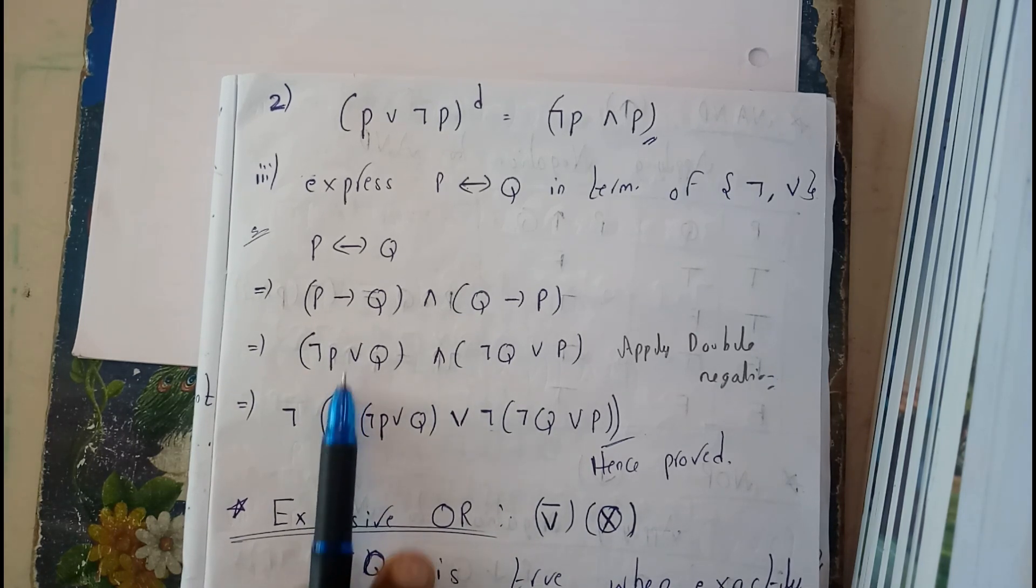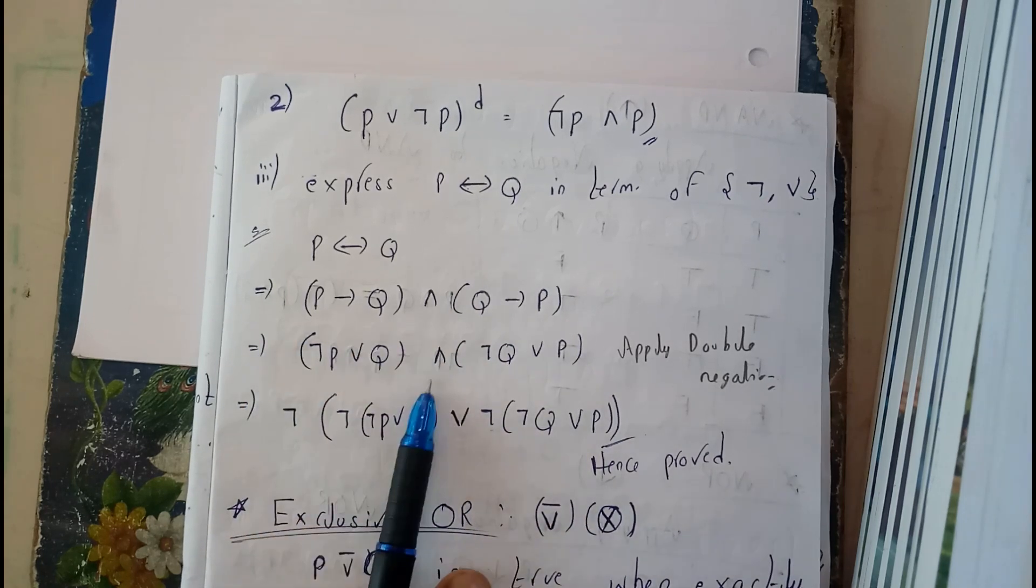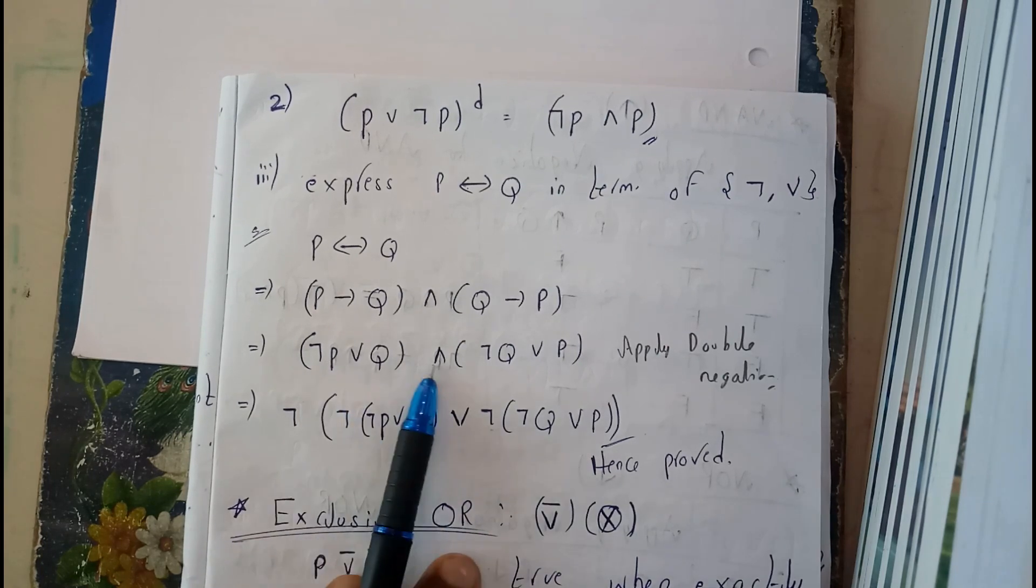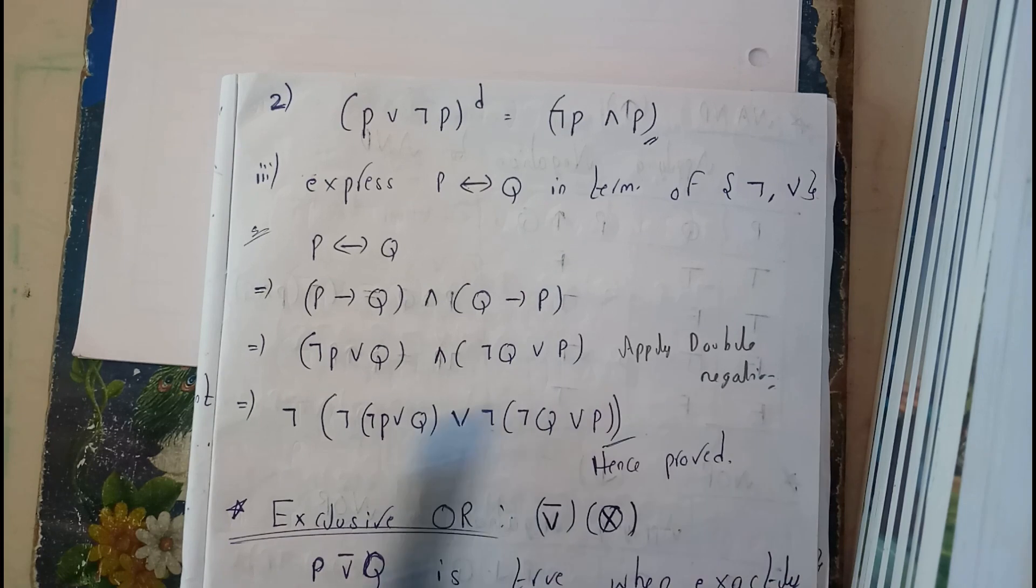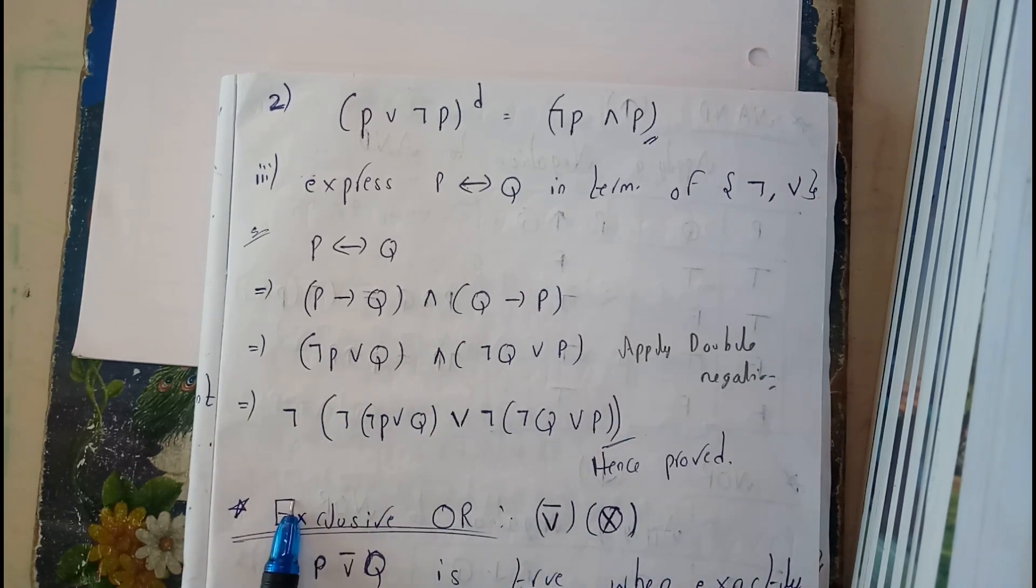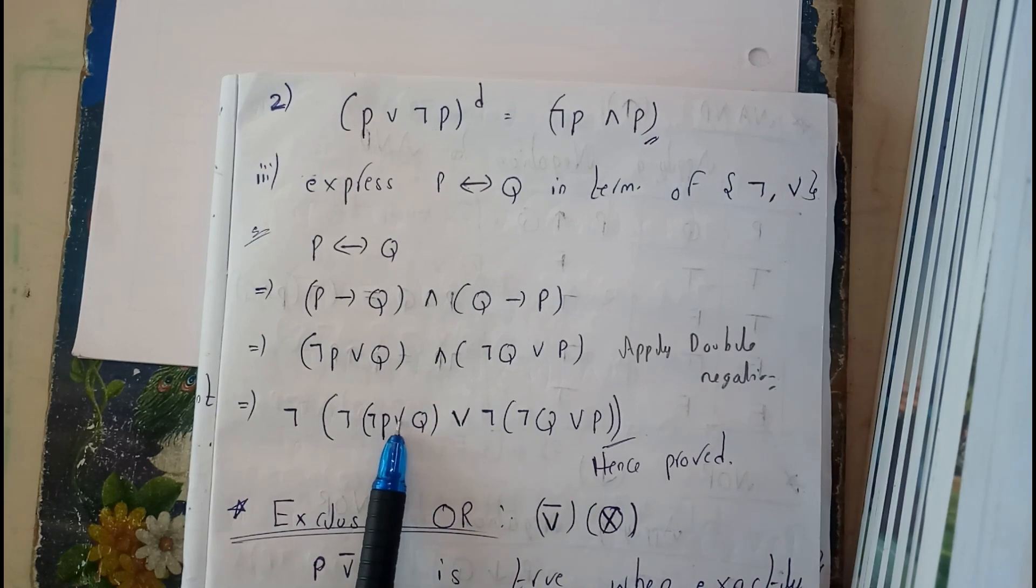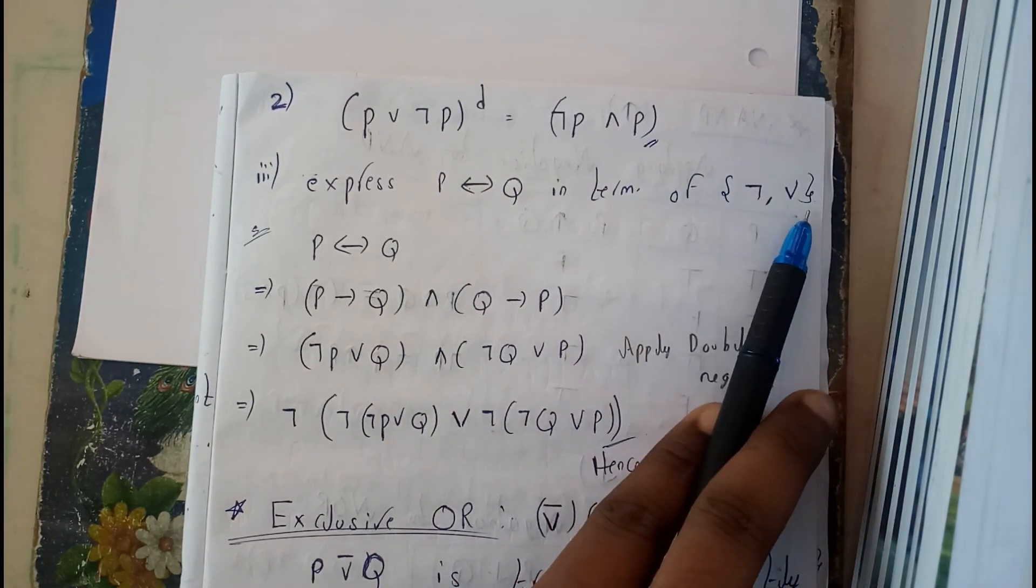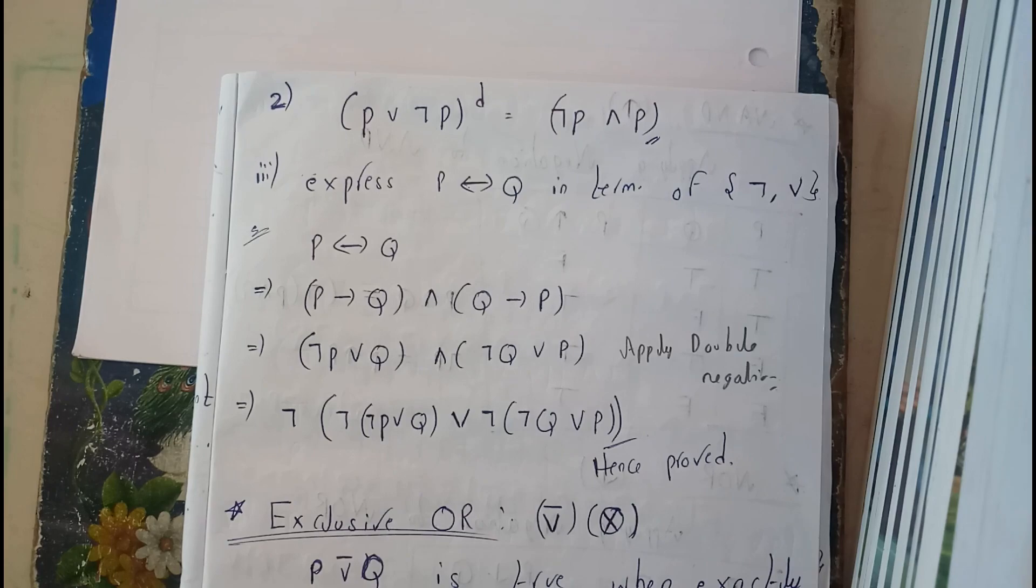So the initial negation: negation of this AND becomes OR, and negation of this. I'll be applying the whole negation again, so the result will not be changing. Hence, by observing it clearly, you got everything in terms of negations and OR. I hope everyone is clear with this duality topic. Thanks for watching.